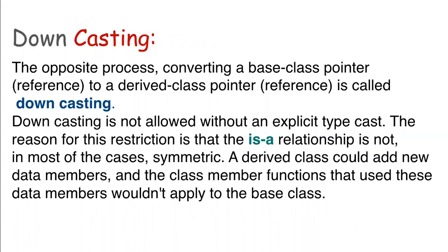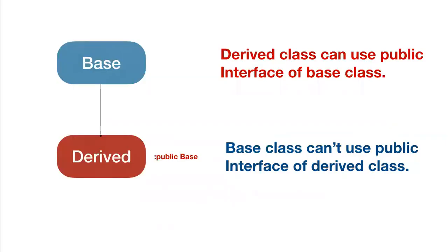In the case of downcasting, it is the opposite process to upcasting — we convert the base class pointer to the derived class pointer. It is not allowed implicitly because there is no 'is-a' relationship; we have to cast it explicitly. This is because the derived class can add some extra functionalities which may not be applicable to the base class. The derived class can use the public interface of the base class, but the base class cannot use the public interface of the derived class.